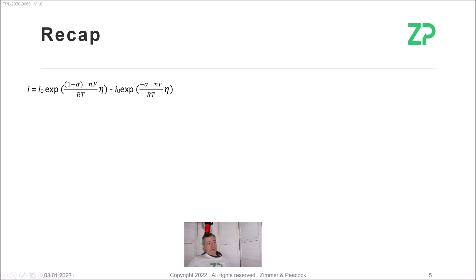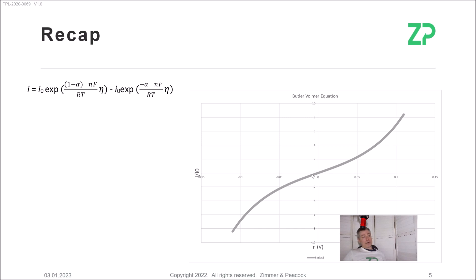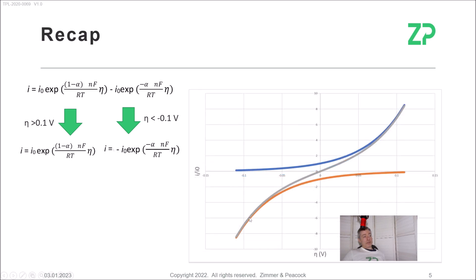To recap: the full Butler-Volmer equation is plotted across the whole potential range. In the region where overpotential is greater than 0.1 V, you can see a really good fit with the simplified anodic Butler-Volmer. And in the region less than minus 0.1 V, you also get really good correlation with the simplified cathodic version. So you don't have to worry about the full Butler-Volmer equation as long as you're looking at relatively large overpotentials — you can just use the simplified versions.